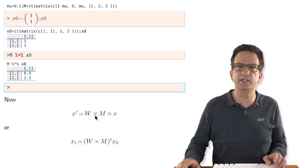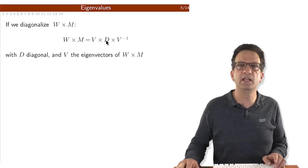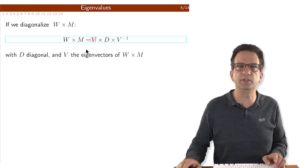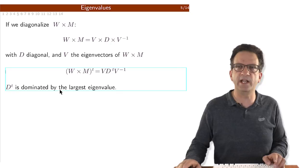If we take W times M and diagonalize it, it's easier to look at the matrix power. So if W times M equals V times D times V inverse, where D is a diagonal matrix and V is the eigenvector matrix, then (W×M)^T equals V times D^T times V inverse. D to the T is dominated by the largest eigenvalue — just like type 1 grew with a higher rate than type 2 — so when D is diagonal, it's dominated by the largest positive eigenvalue.